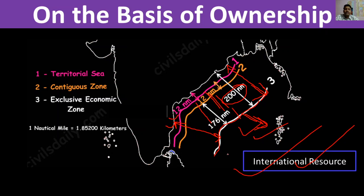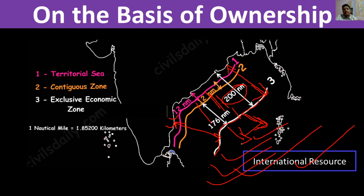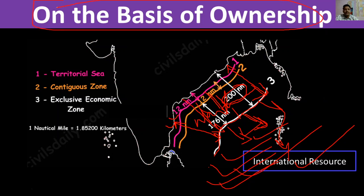Beyond 200 nautical miles, the resources are international resources. India has no sole claim over them. If India wants to exploit resources beyond this limit in the ocean, it needs to take permission from international organizations. Within 200 nautical miles is national resource; beyond that is international resource.